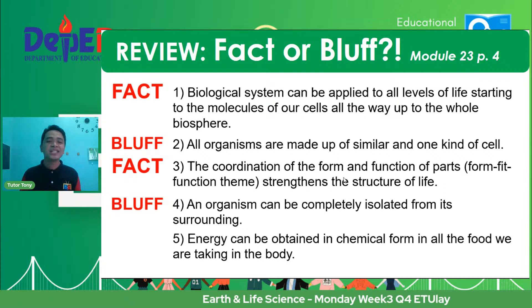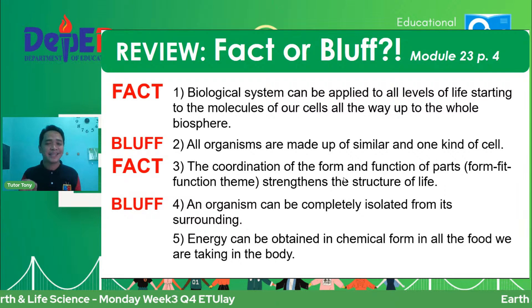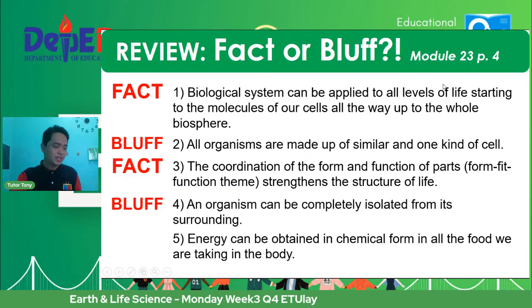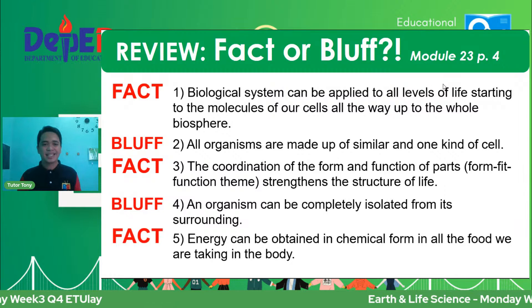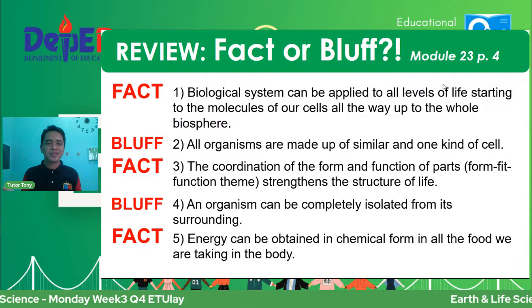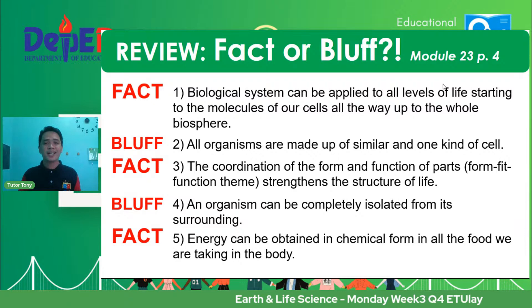For question number 5: energy can be obtained in chemical form in all the food we take into the body. This is found on module number 23, page 4. The answer is a fact — we obtain energy in the form of chemical energy from the food we eat. Good job! I hope if you're on team replay, you can follow along with the answers.